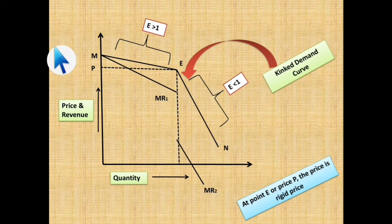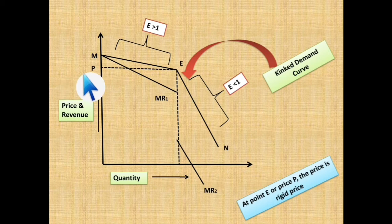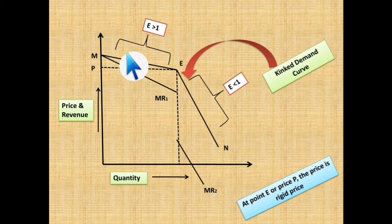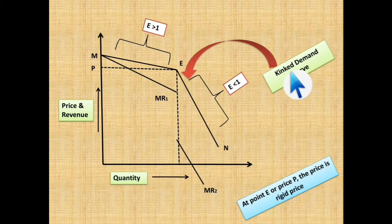In the opposite case, suppose you decrease the price. Your competitor will follow you — meaning no gain. You are serving the same customers at a lesser price. The sector from E to N is relatively inelastic — elasticity less than 1. Whether you change the price to some extent, there is no change in quantity — no gain — meaning it is relatively inelastic. So the demand curve moves from a region of relatively elastic to relatively inelastic. At the point of kink, that is point E, the price is fixed — that is why it is the rigid price. This is the kinked demand curve, and at point E, the price P is the rigid price.